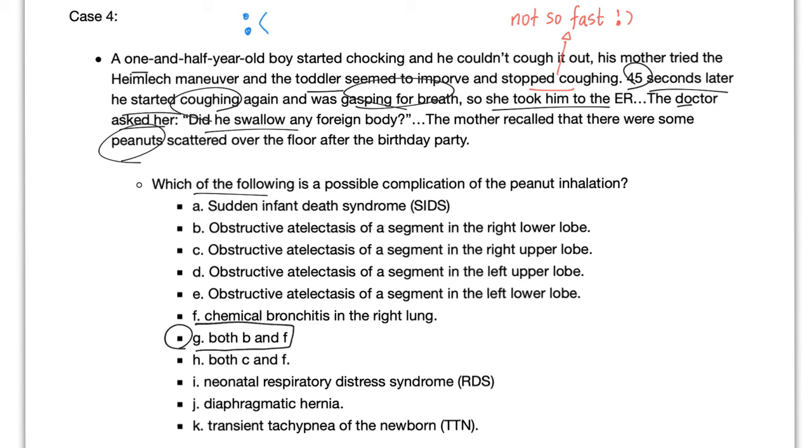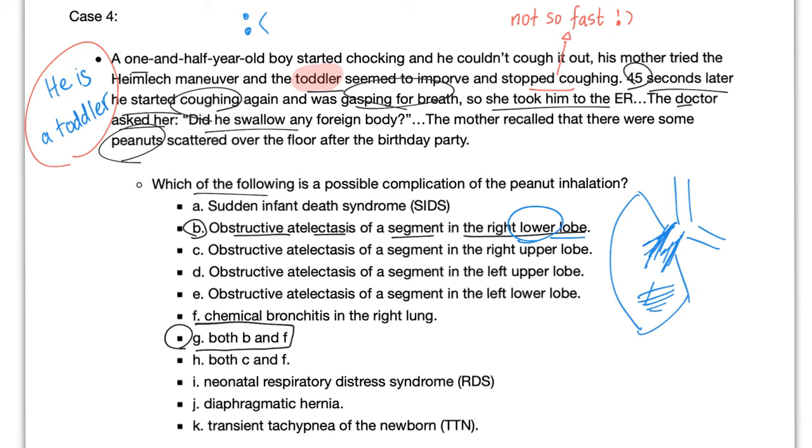And the answer is G, both B and F. Let's start with B. Obstructive atelectasis of a segment in the right lower lobe. Because it doesn't tell us the position of the baby, so it's probably upright. When it's upright, as you know, this right main bronchus is more vertical. So, the peanut is going to land in the right lung. Which part? Right lower lobe. And this is called gravity, baby. The right upper will happen if the kid was laying down on his right side of the chest.